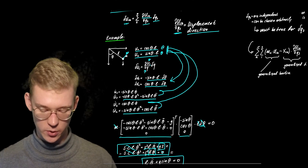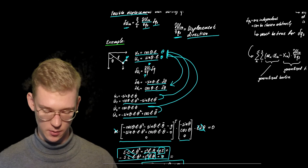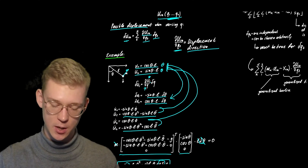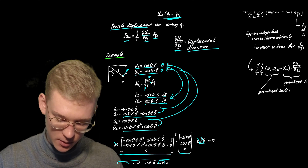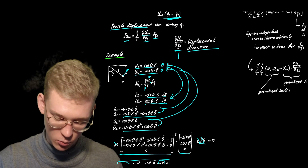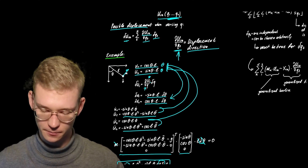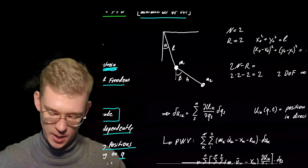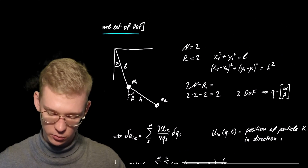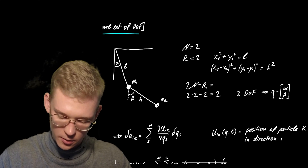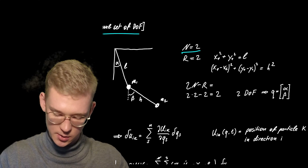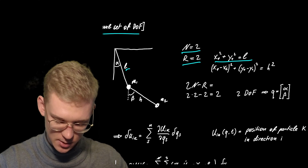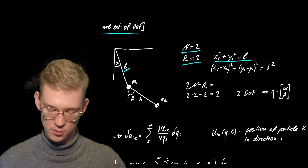By doing it this way we can get the equations of motion without having to know where our system is moving — we get it by deriving the positions with q (theta). Now let's look at an example where we have two bodies and two constraints: the first is that a certain length must stay constant, and the second is that h must stay constant.